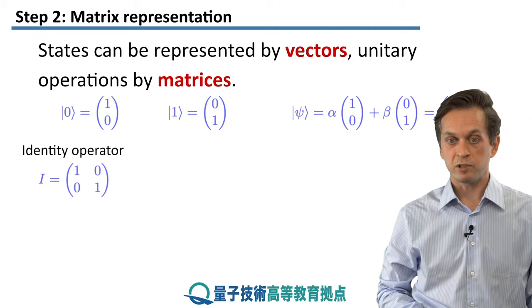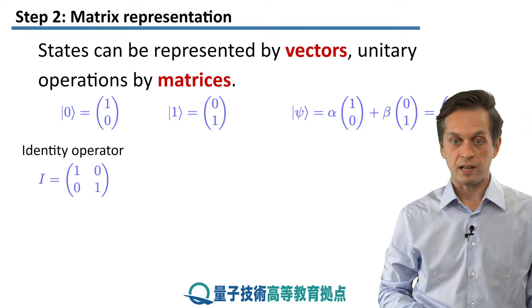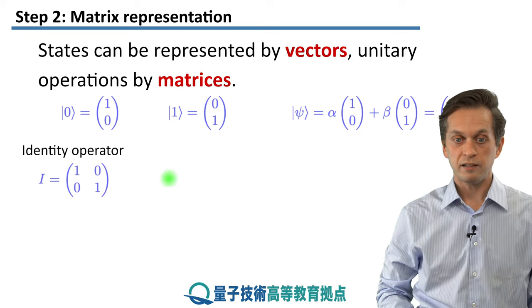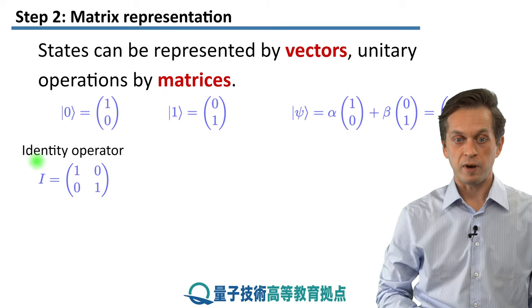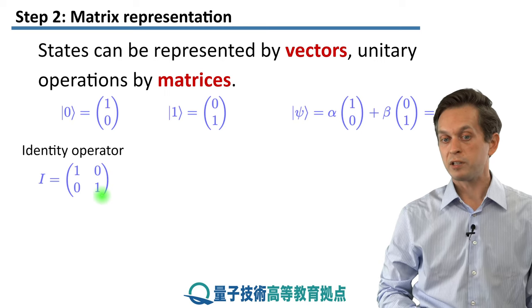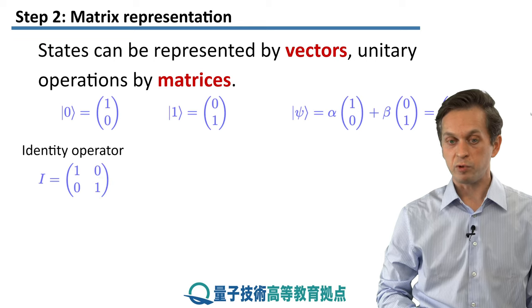So now let's look at examples of some matrices and unitary operations. The identity operator is represented by this matrix right here. It's just a diagonal matrix. It's got 1s on the main diagonal and 0s everywhere else.